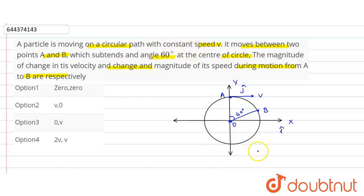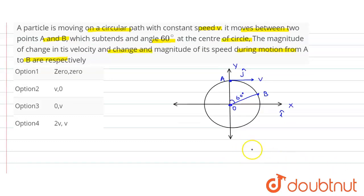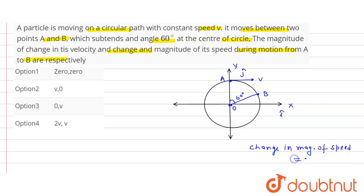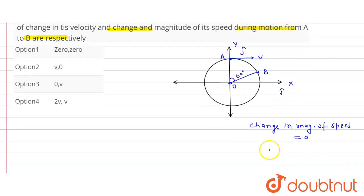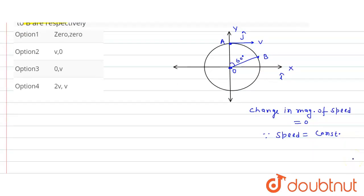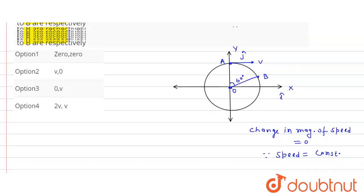The change in magnitude of speed will be zero, because since speed is constant, change in magnitude of speed is equal to zero. So now we have to find the magnitude of v_B minus v_A.